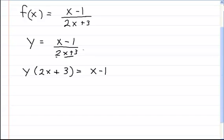I got that by multiplying both sides by 2x plus 3. Now I'm going to distribute the y, multiplying it into each term. This gives me 2yx plus 3y equals x minus 1.